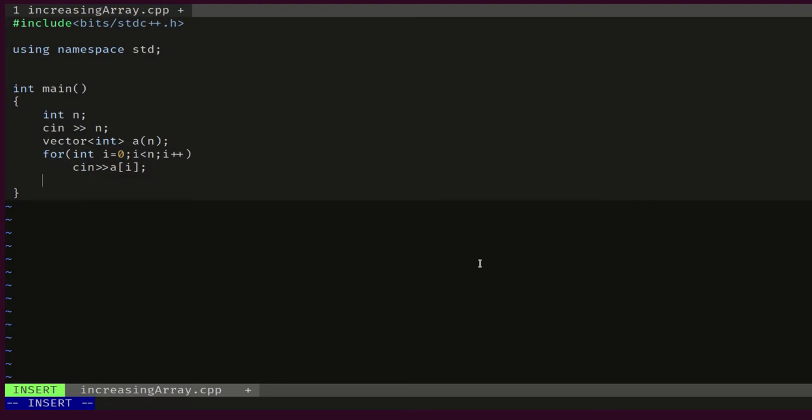Then we need to keep track of a maximum so far. So let's declare a maximum that will be equal to negative one, and then we will also need to declare the output and initialize it with 0.